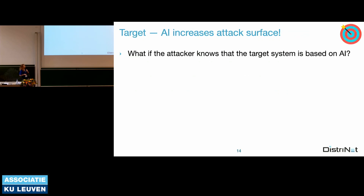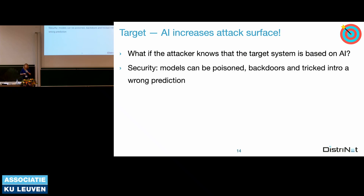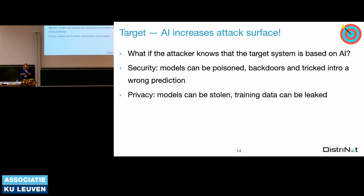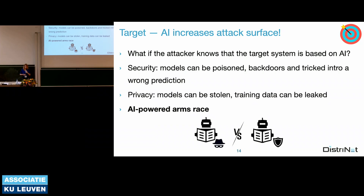Finally, AI can be a target. If an attacker knows AI is used in the system, this opens possibilities: they can target the ML module specifically. Security consequences include models being poisoned, backdoors injected, and wrong predictions induced depending on attacker capabilities and knowledge. For privacy, models can be stolen and training data extracted. In the end, this forms a so-called AI-powered arms race, with automation on both sides, and as researchers we simulate both sides to see where that leads.